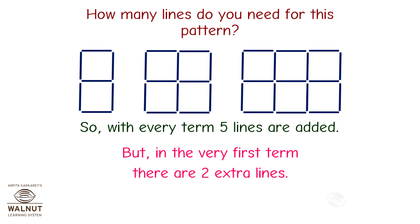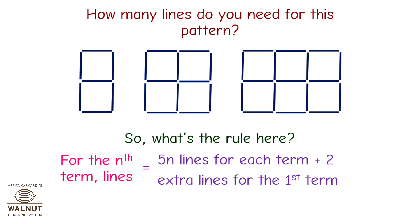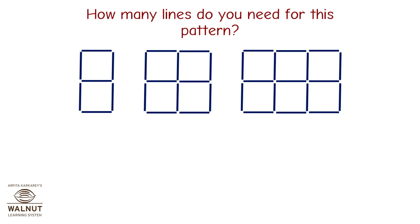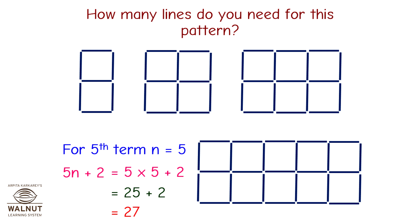But in the very first term there are two extra lines: five plus two equals seven lines for the first term. So what is the rule? For the nth term, lines equal five n lines for each term, plus two extra lines for the first term, which is equal to 5n plus 2. For the fifth term, n equals 5, so 5n plus 2 equals 25 plus 2, which equals 27. Does it work? Yes! That means the answer is correct.